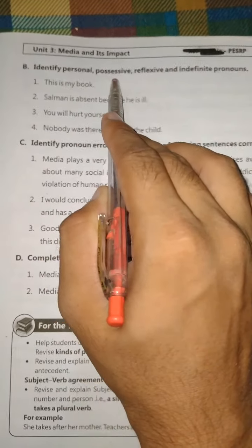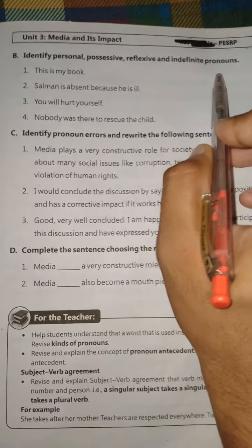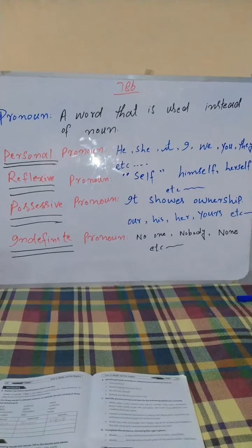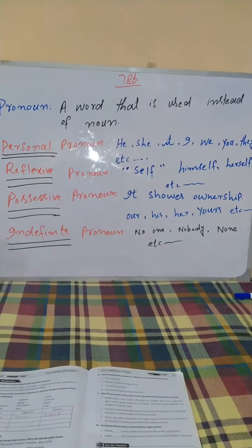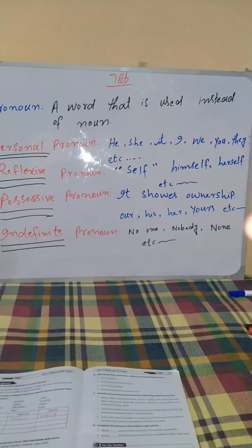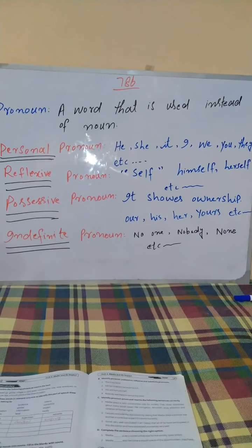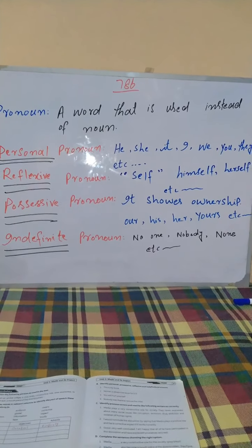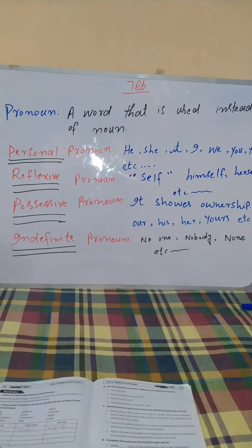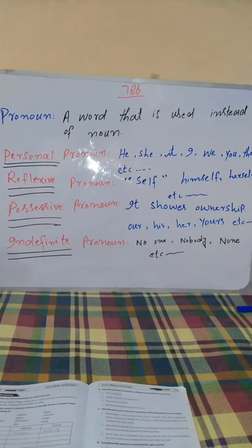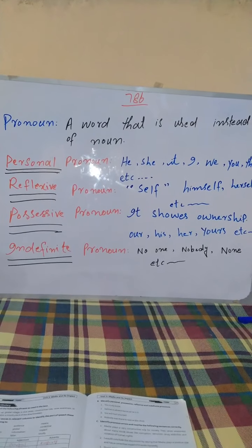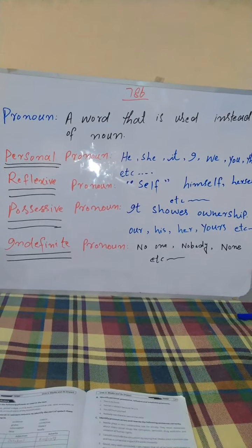Let's move to the next portion: identify personal, possessive, reflexive, and indefinite pronouns. I have written on the whiteboard for your ease. A pronoun is a word used instead of a noun. Personal pronouns include: he, she, it, I, we, you, they. Reflexive pronouns include: self, himself, herself. Possessive pronouns show ownership: his, her, yours. Indefinite pronouns include: no one, nobody, none.